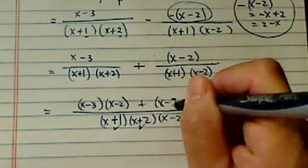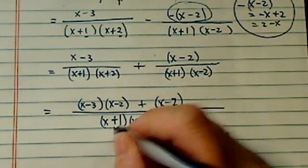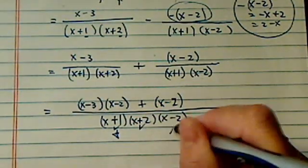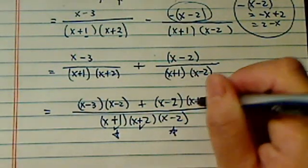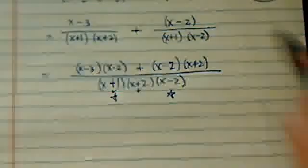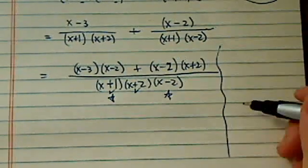Plus x minus 2 here. I'm going to do the same thing here. x plus 1 is here, x minus 2 here. So x plus 2 is missing.